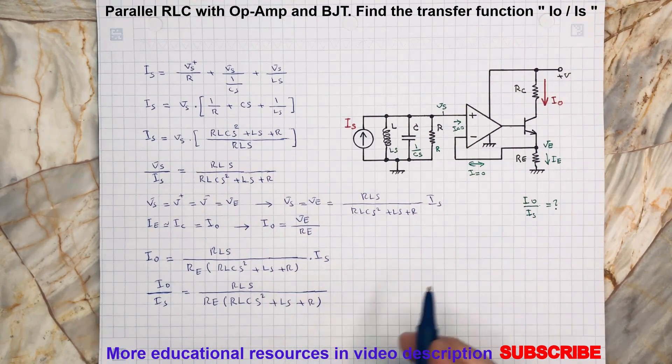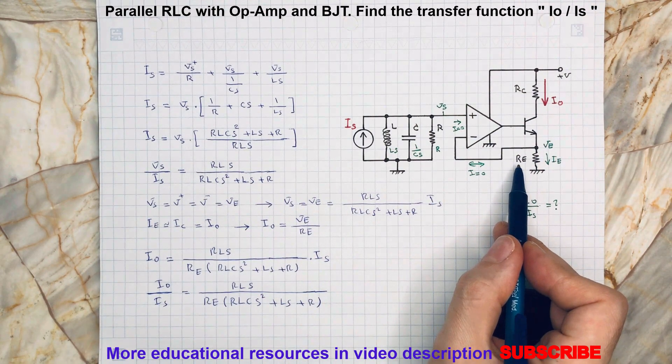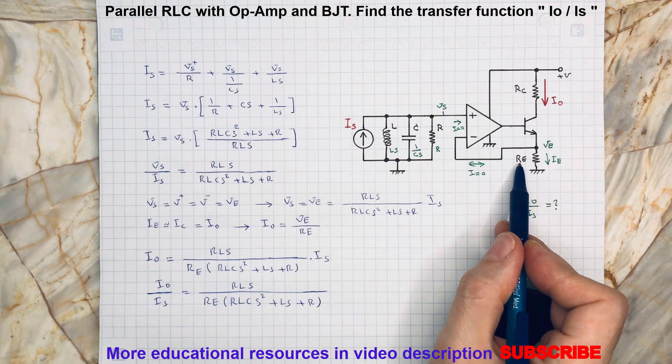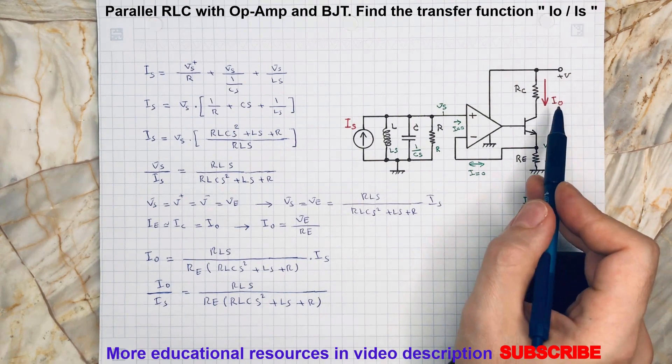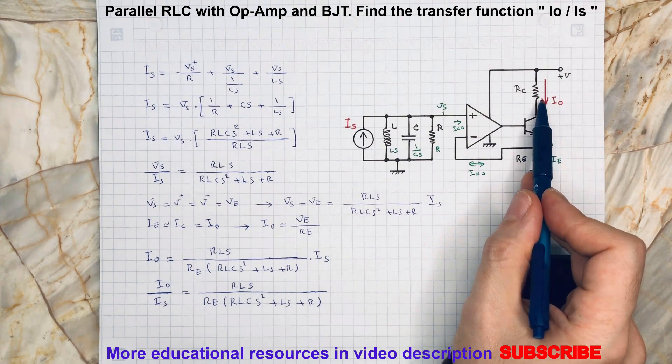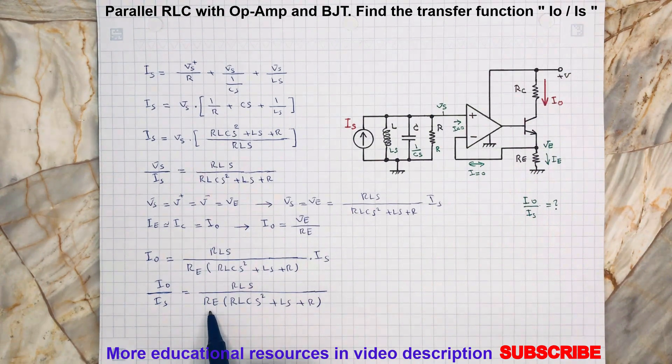So this also makes sense, because by increasing RE, the value of the resistor here, you will have less current passing through IO or collector current here. It can be checked here.